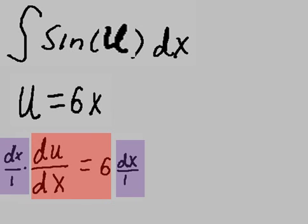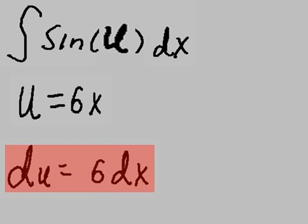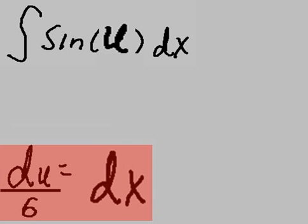Now I multiply both sides by dx. That cancels out the dx on the left hand side. Now I divide both sides by 6. Cancels on the right. And now I have du over 6 equals dx.